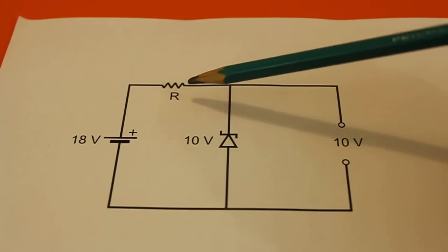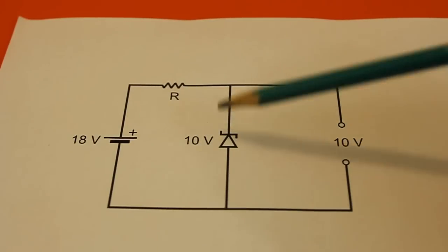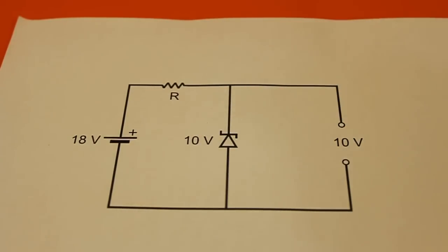The resistor is necessary to limit the current that passes through the diode, but this has the problem that the current through the load will also be small.